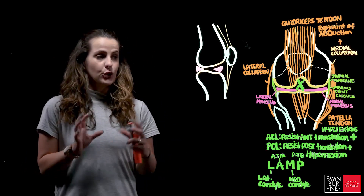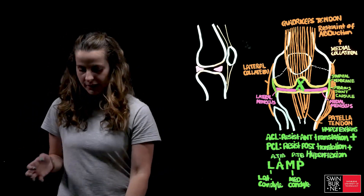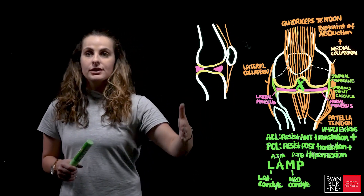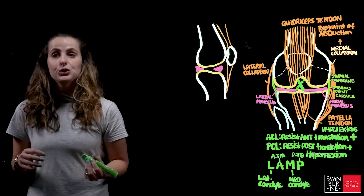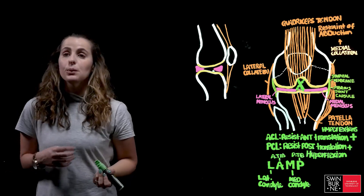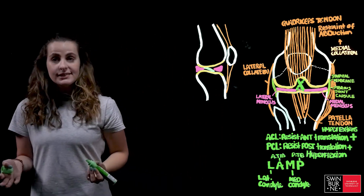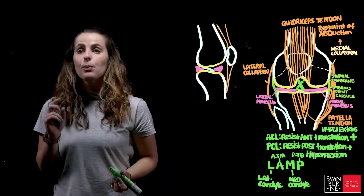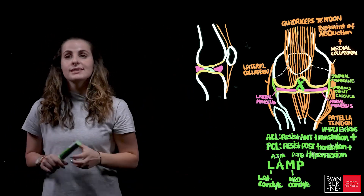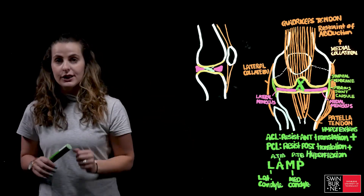If we consider a mid-sagittal view of the intracapsular ligaments, the ACL attaches to the anterior aspect of the tibial plateau and courses posteriorly to attach to the lateral condyle. The PCL originates from the posterior aspect of the tibial plateau. This arrangement means both ligaments form a cross or X-like shape in both an AP and a sagittal view.